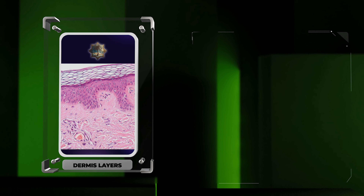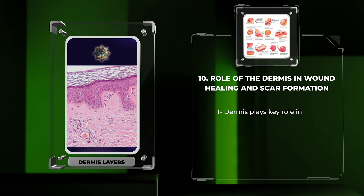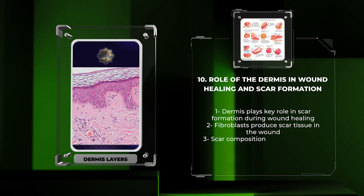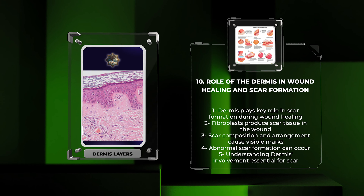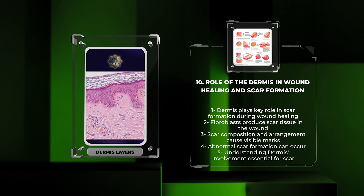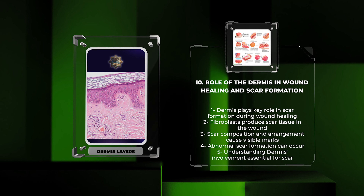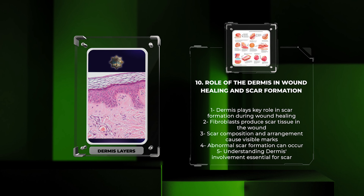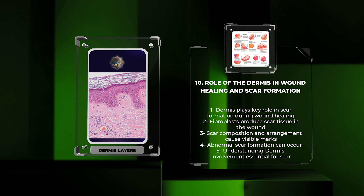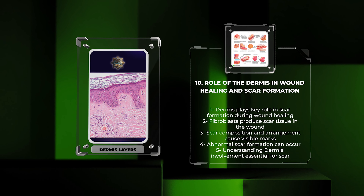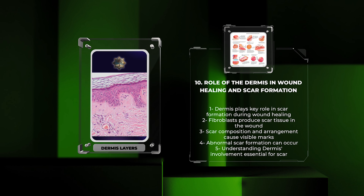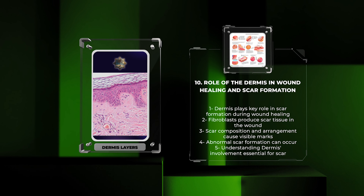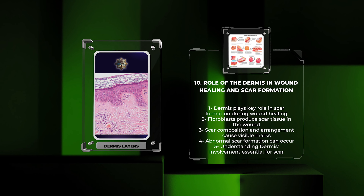In wound healing, the dermis plays a key role in scar formation. Skin cells called fibroblasts move to the wound and create scar tissue by producing components of the extracellular matrix. Differences in the scar's composition and arrangement cause visible marks, and abnormal scar formation can happen when the healing process goes awry.